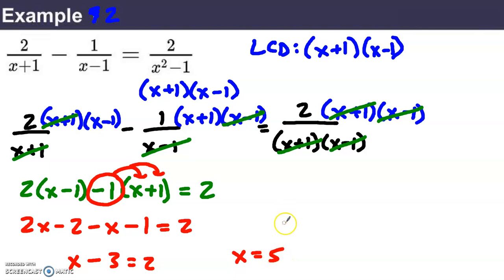Now, I'm not ready to say that's the answer yet. Let's check it. If I let x be 5, do I get a true statement? If I let x be 5, this would say 2 sixths, which is 1 third. Minus, if I let x be 5, this would be 1 over 4, 1 fourth. Does that equal? 2 over, if I let x be 5, 5 squared is 25. 25 minus 1 is 24. That's 2 24ths or 1 12th.